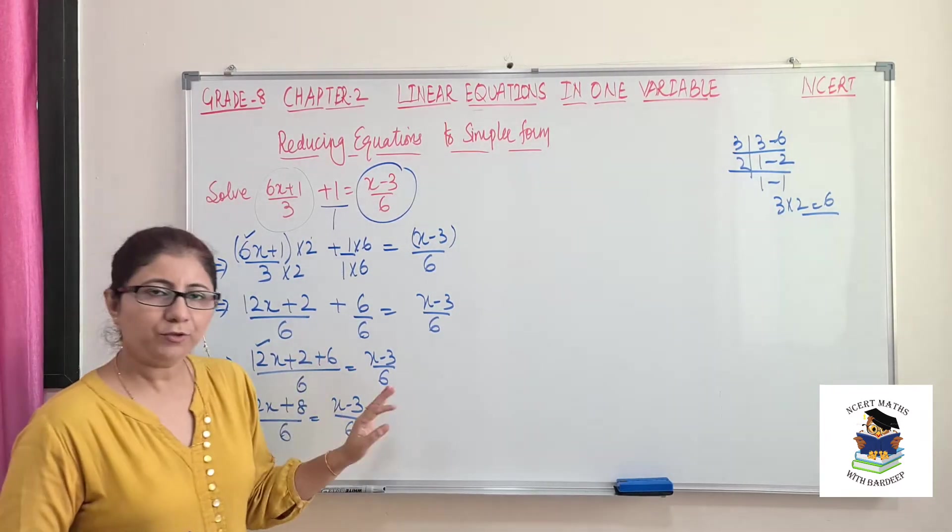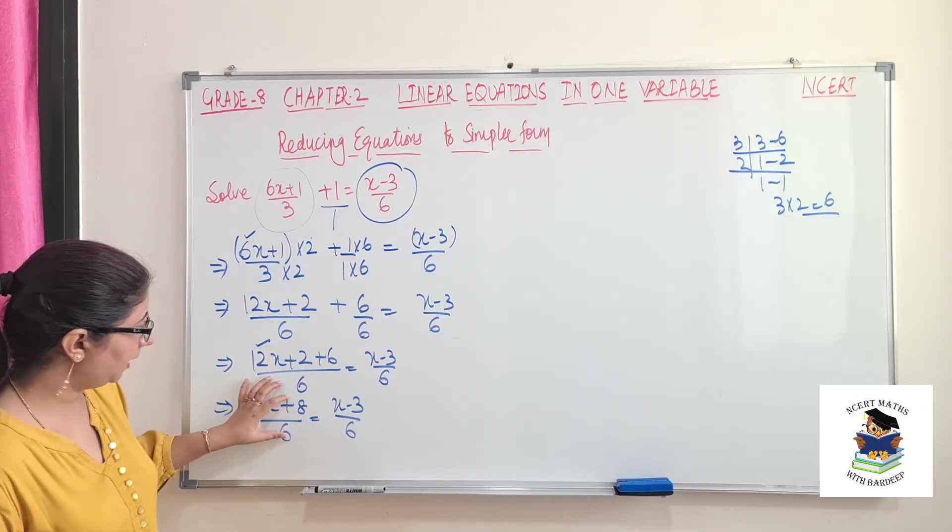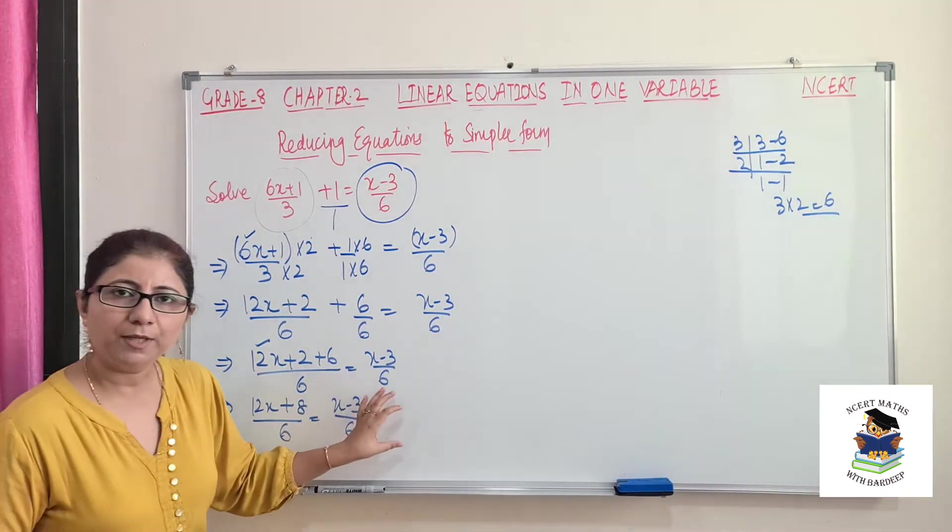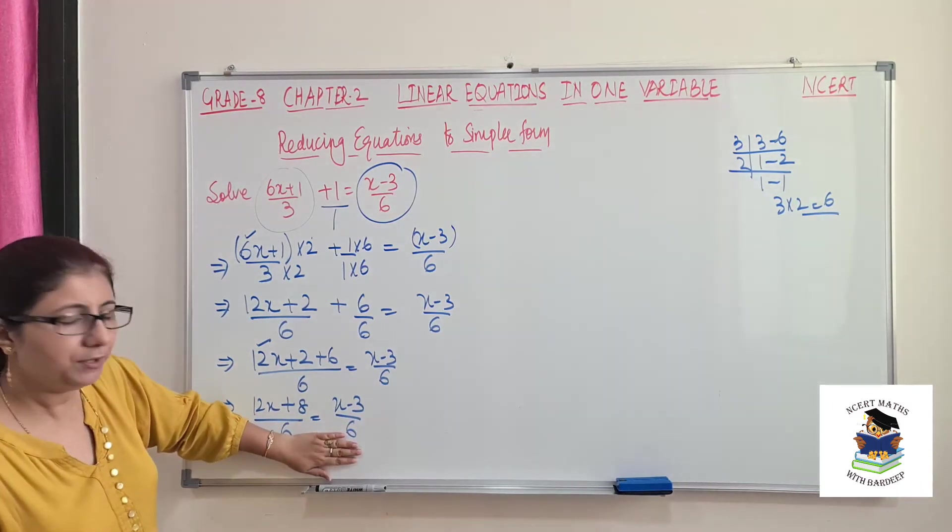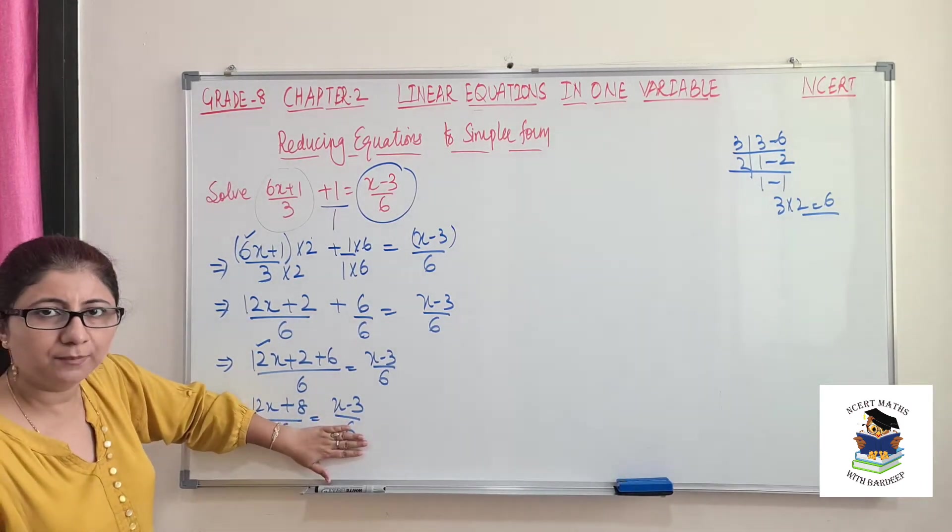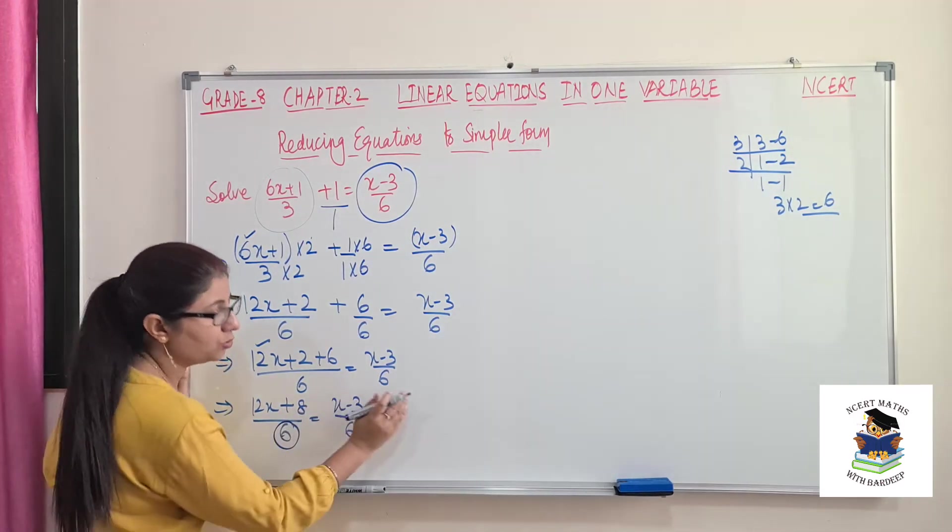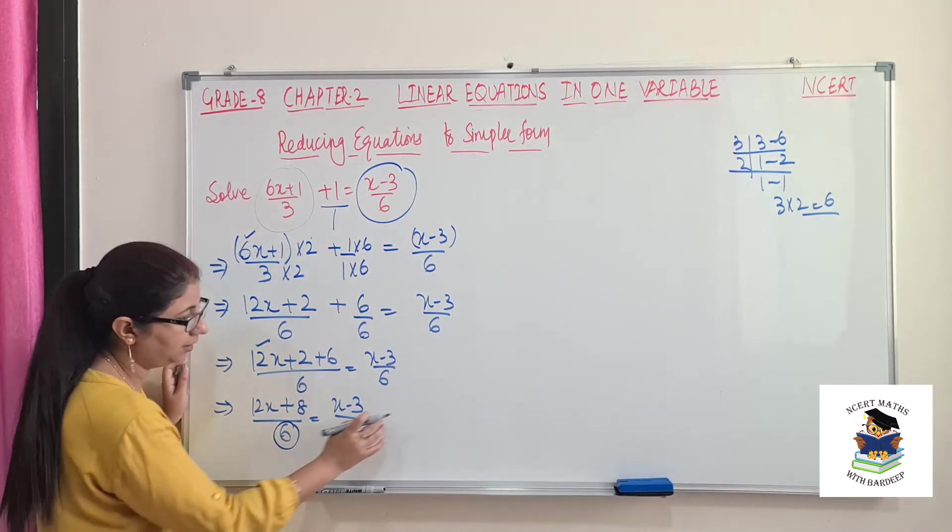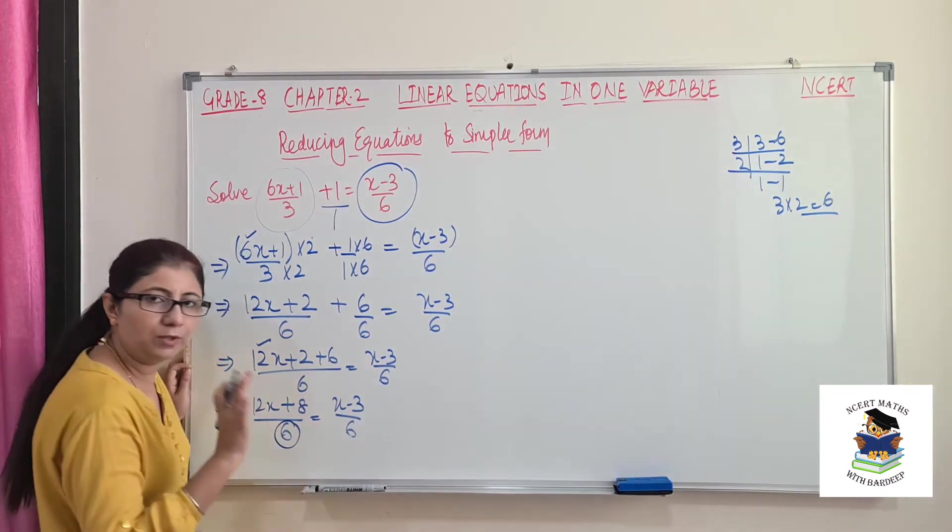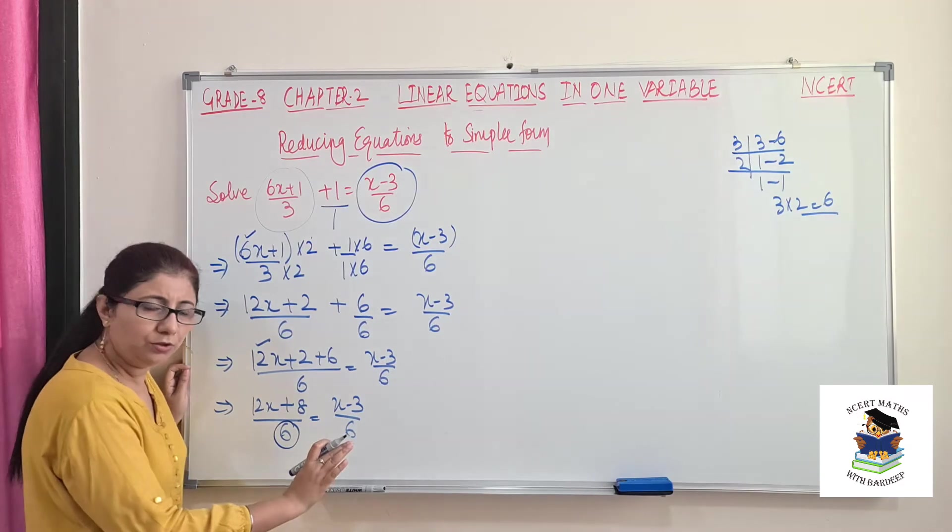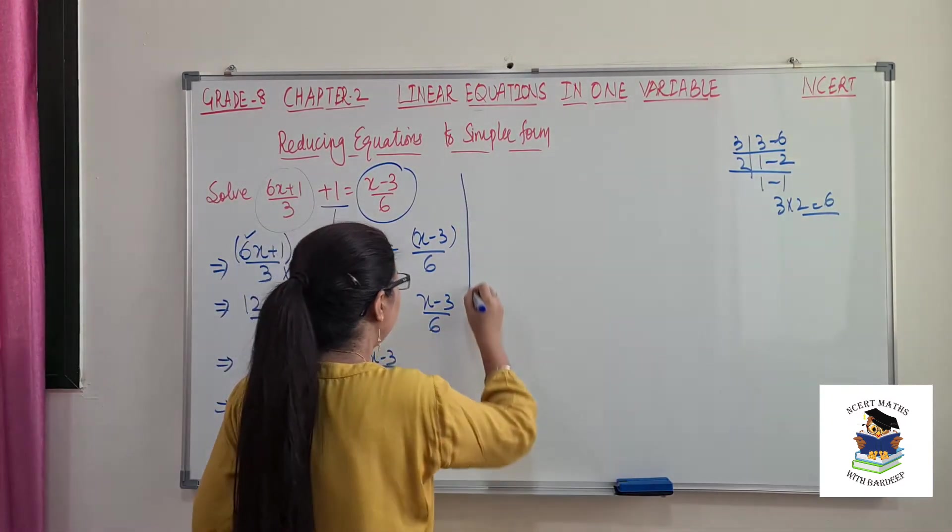After this step, we have 2 options. We can cross multiply them, so 6 will be multiplied with this, 6 will be multiplied with this also. But better is whenever you have same denominators, just ignore them. Because if I take this 6 to this side, this is divided here, it will go to this side, it will come here multiplied, and this and this will be cancelled.